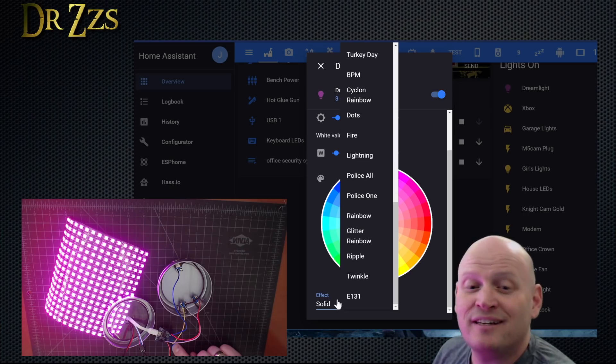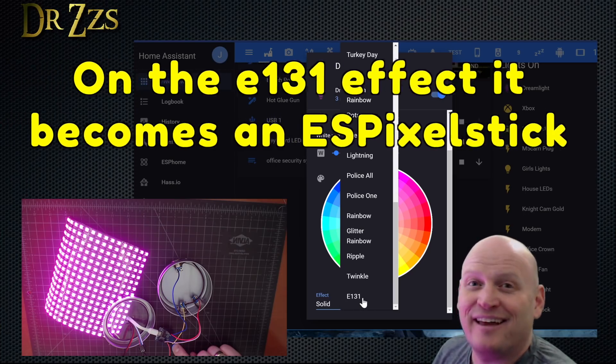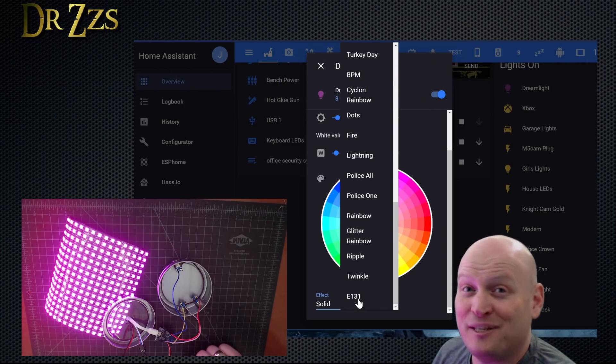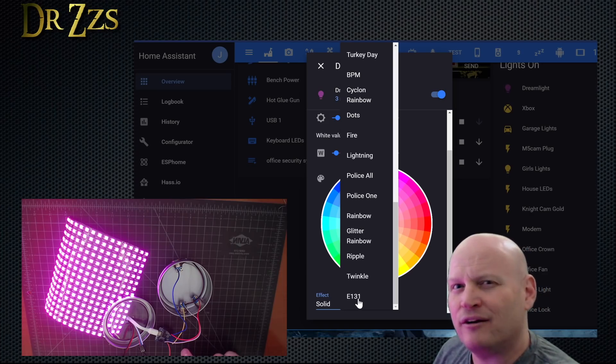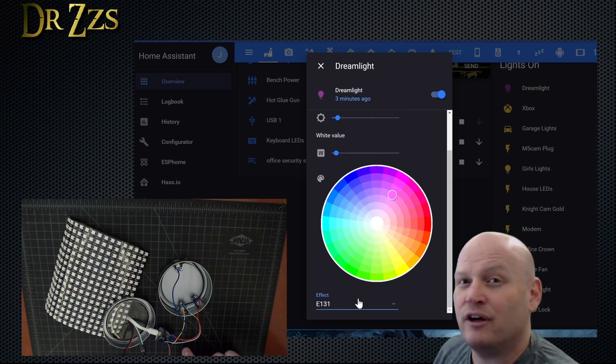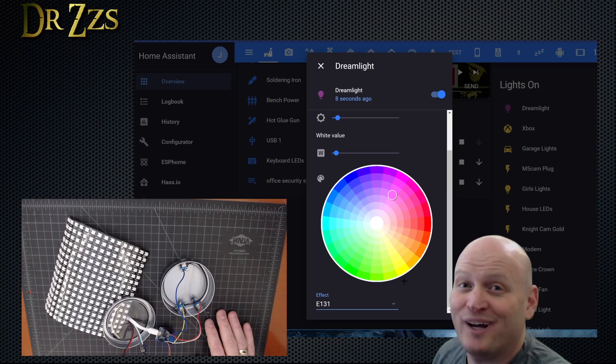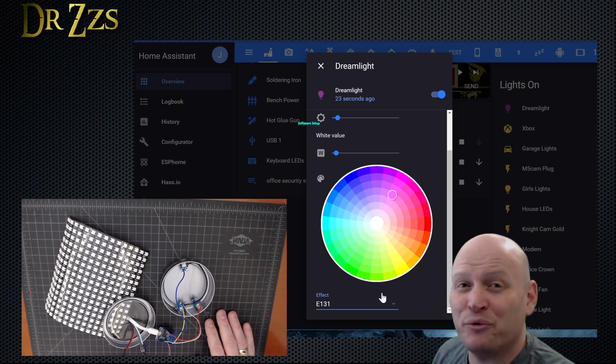And if you choose the effect E131, then you can use something like Xlights and run whatever different kind of crazy cool pattern you can come up with on your little LED matrix. If you're not running a pattern on there, then it just turns everything off. Is that cool or what? All this is also controllable through MQTT.